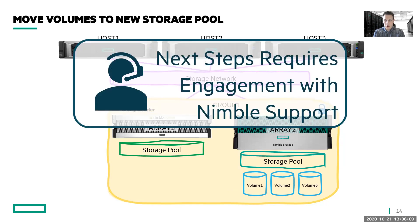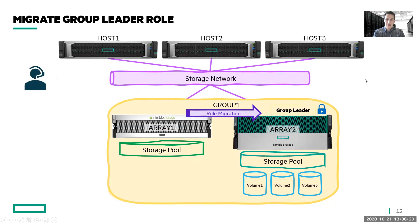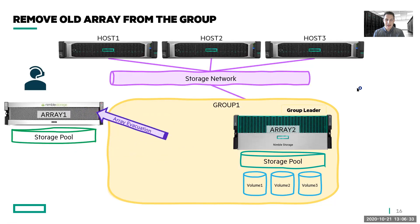Once your volumes are migrated, it's time to move things on. You'll need to engage with support again for the next two steps. The next step is to make the new array the group leader — give it ownership of the group. This is called a role migration. You then evacuate the old array from the group. Since it has none of the old volumes on it, no data goes with it — everything stays in place since you already migrated your volumes and the group leader.